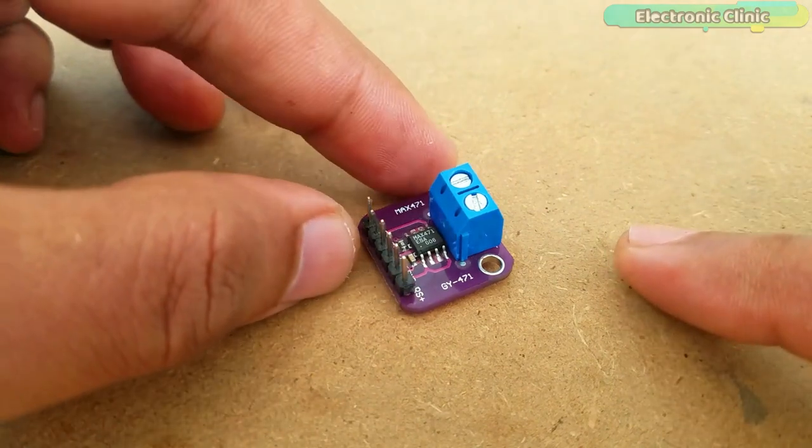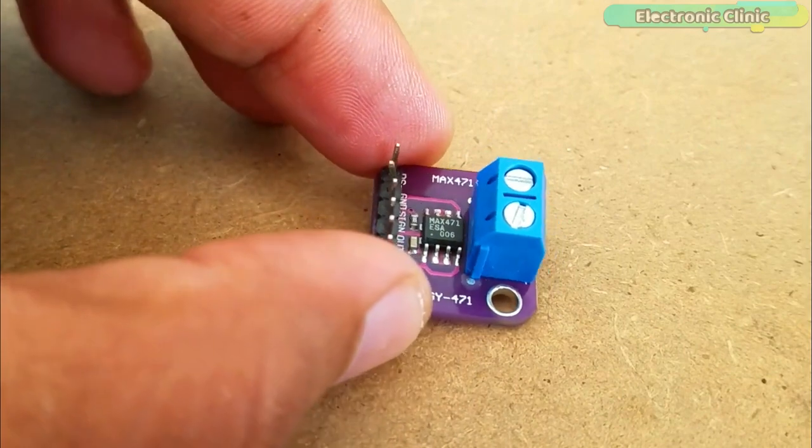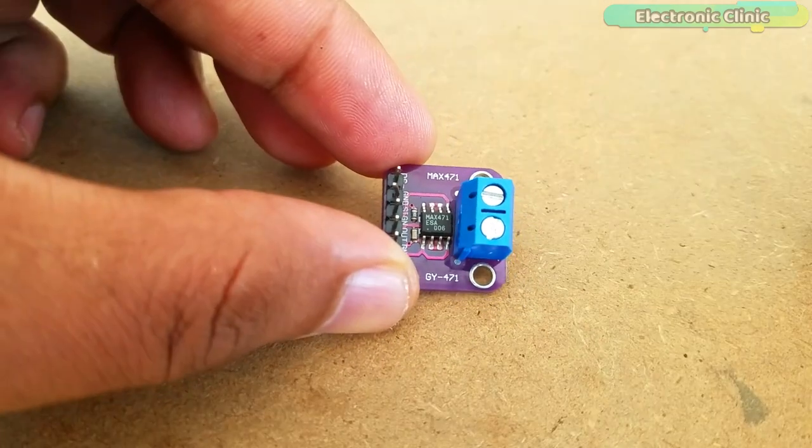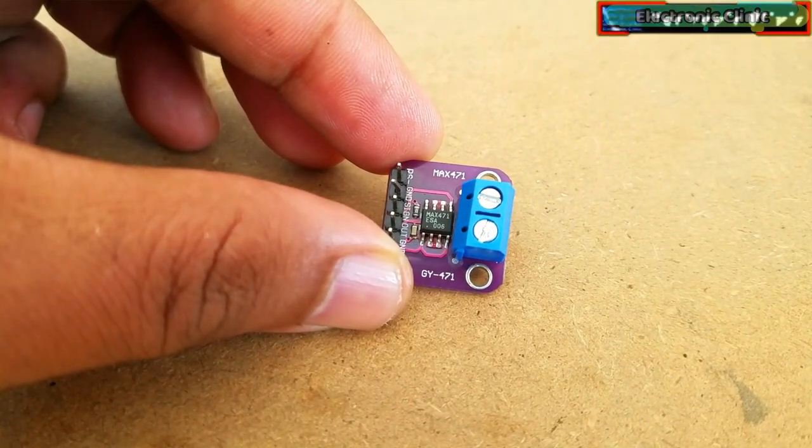This is the MAX471 bi-directional high side current sense amplifier breakout board. This IC can take any input voltage of 3 to 36 volts. It can measure up to plus minus 3 amps.